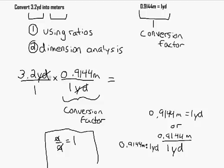So 3.2, let's just see here. So 3.2 multiplied by, this is 0.9144.